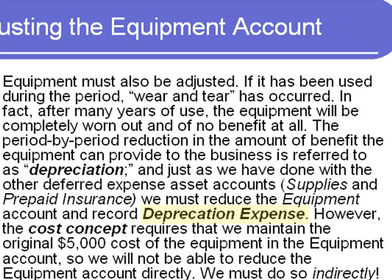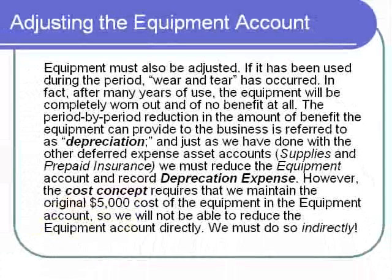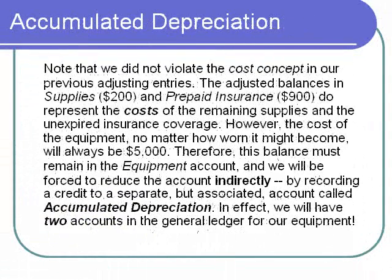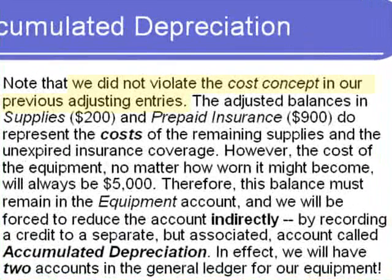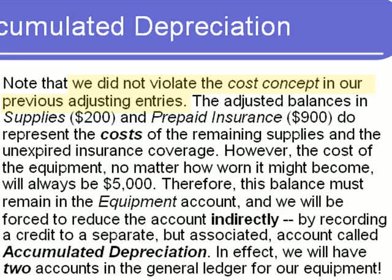However, equipment is different from supplies and prepaid insurance. The cost concept requires that we maintain the original cost of the equipment — $5,000 — in the equipment account. Therefore, we will not be able to reduce the equipment account directly, but we can do so indirectly. We did not violate the cost principle when we reduced prepaid insurance and supplies, because all we're doing is recording those assets at the original cost of what we still have on hand.